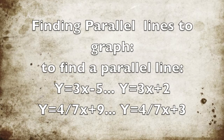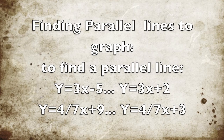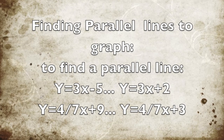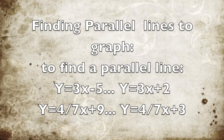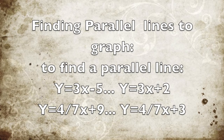From a regular line, how do you find a parallel line? Well, all you have to do is change the b, the y-intercept, to a different number. It could be either negative or positive — it doesn't matter. So if you have y equals 3x minus 5, you could change it to something like y equals 3x plus 2. Or y equals 4 seventh x plus 9, you could change it to y equals 4 seventh x plus 3.